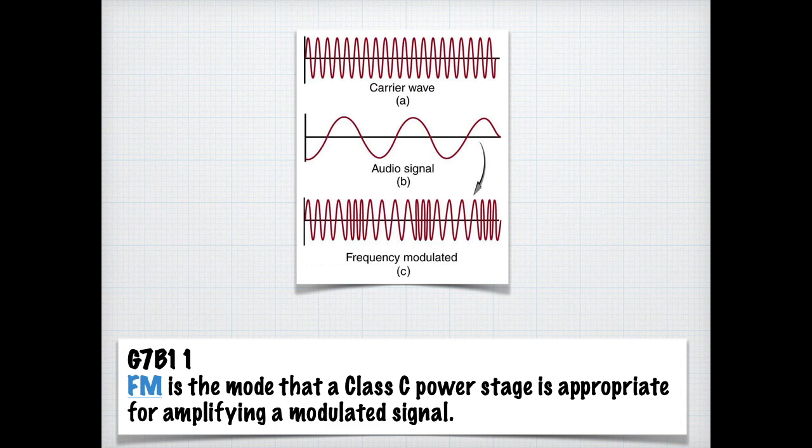One thing you need to remember about the Class C amplifier is that FM is the mode that the Class C amplifier stage is appropriate for amplifying a modulated signal.